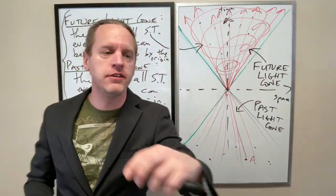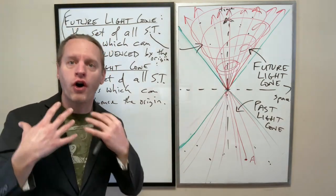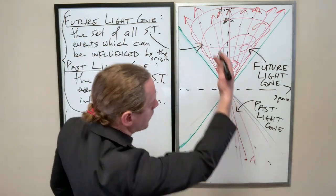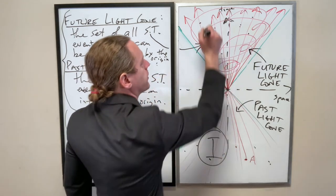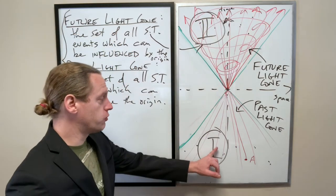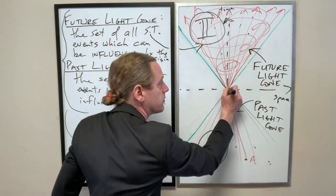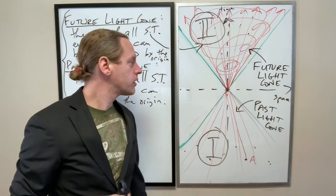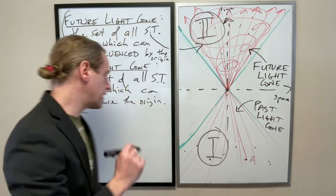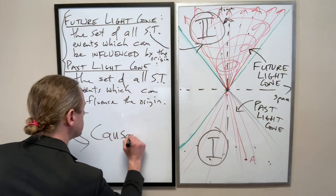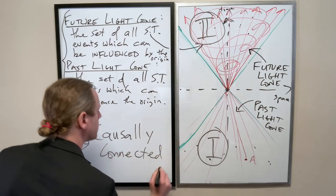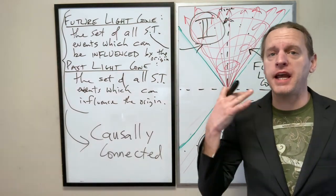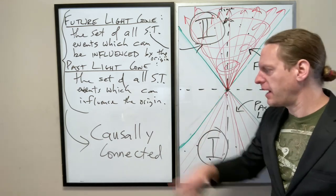We're now physically describing the regions of the universe that can and cannot communicate with each other. That's why this is a fundamentally more important diagram than a standard X-Y position versus time graph — we've isolated the regions of the universe that can speak with each other. The word we give to that is causally connected. Events in region one — the past light cone — can cause something to occur at the origin, and events in region two — the future light cone — can be caused by something occurring at the origin. These regions are causally connected.